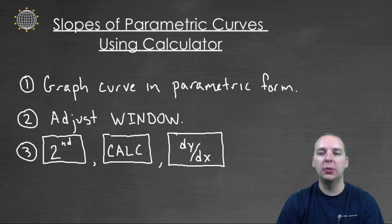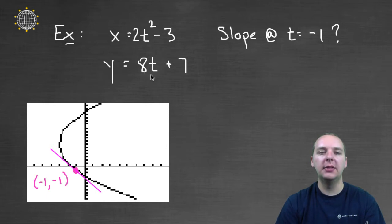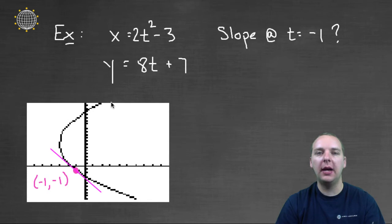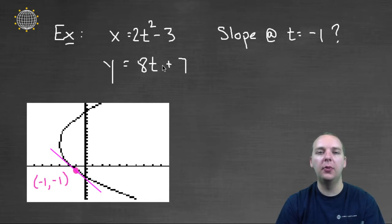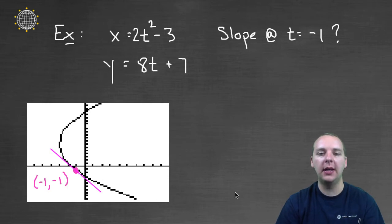Let me show you how this works with an example. Let's say we had x equals 2t squared minus 3 and y equals 8t plus 7. Here I've drawn the parametric curve in black on my TI, and I'd like to find the slope at t equals negative 1. The point at t equals negative 1 would be negative 1, negative 1 — you just plug in negative 1 for t into x and y. I want the slope of this pink line right here.